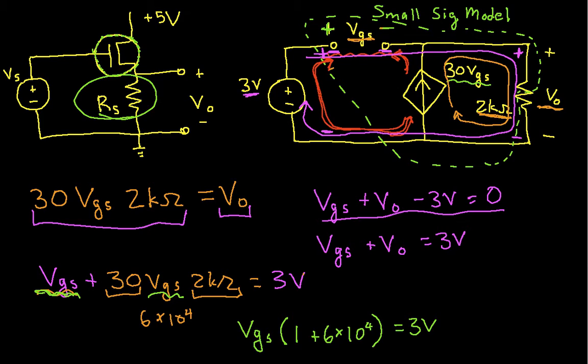Or you can see then that I can solve for VGS. VGS is equal to 3 volts divided by 1 plus 6 times 10 to the 4th. And I can work this out, and I'm going to get something that's very, very close to 0. But let's see how close this is here.